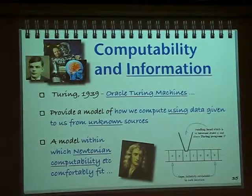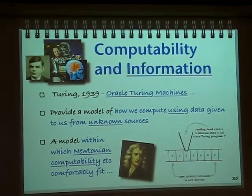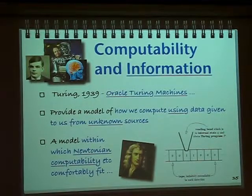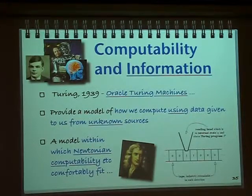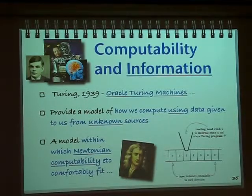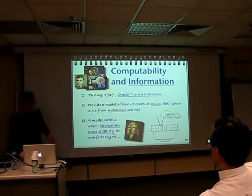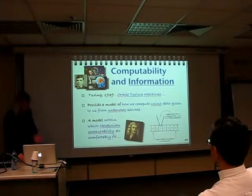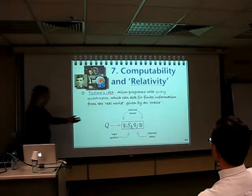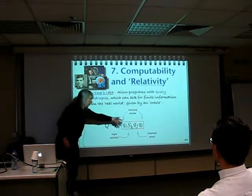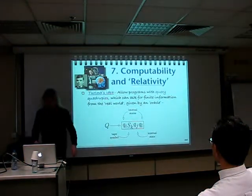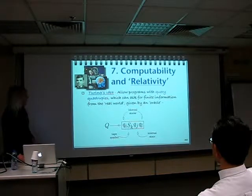You don't just program your machine to do something — you're always inputting information. You go on the web and drag information from all sorts of sources. You don't know if that source is reliable or not; you have to have an element of trust. And that information is coming from an oracle. So the oracle Turing machine relates to what we're doing now — you've just got a different type of quadruple extending your machine.